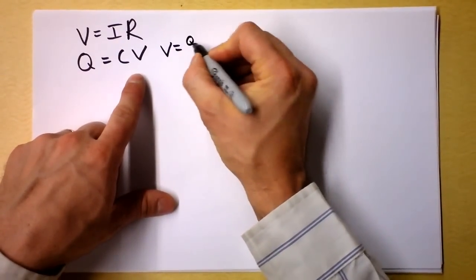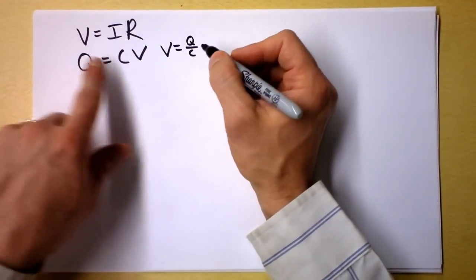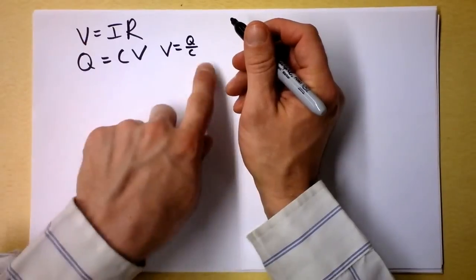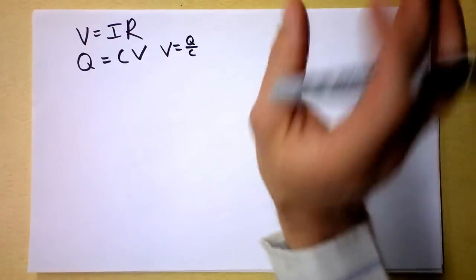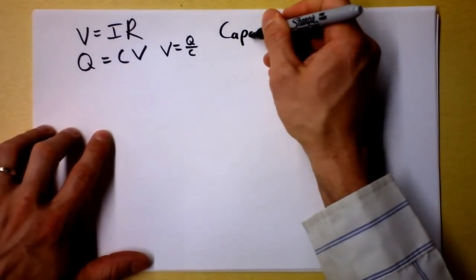Well, V is Q over C in a very similar way, except that R is linear here with V, but C is inversely proportional to V. So we're going to get some different results here with capacitors as we try combining them.